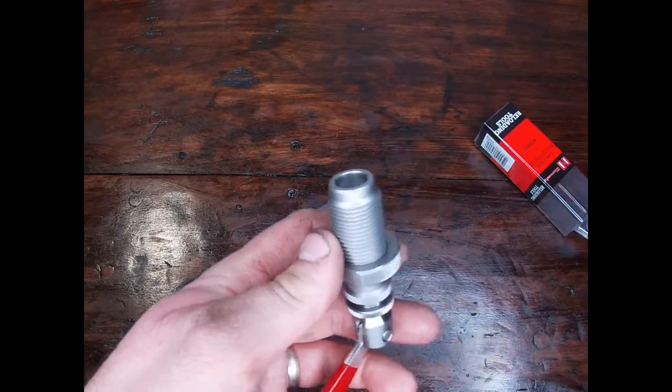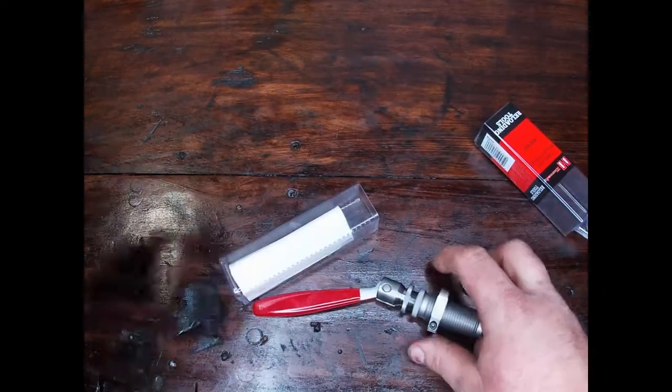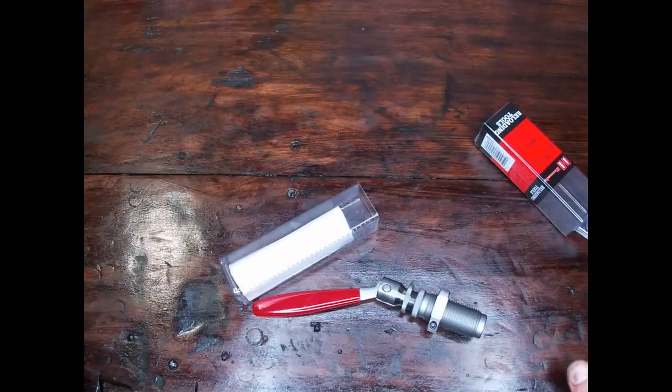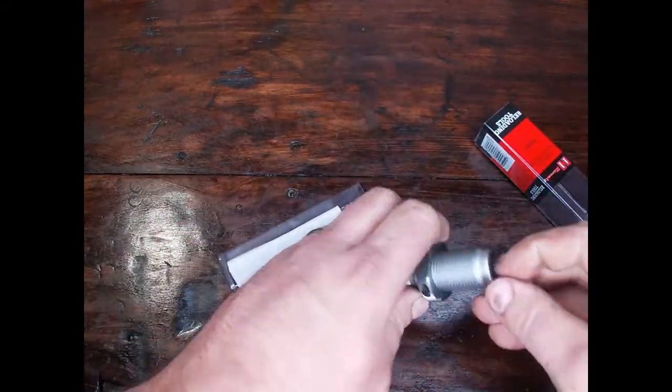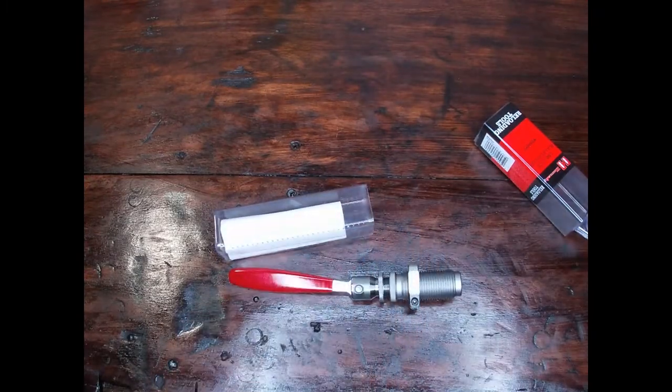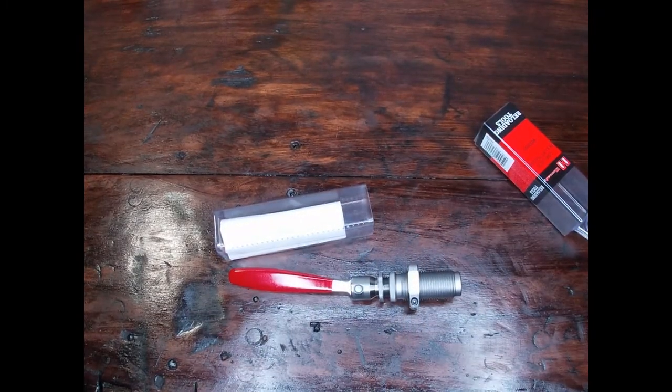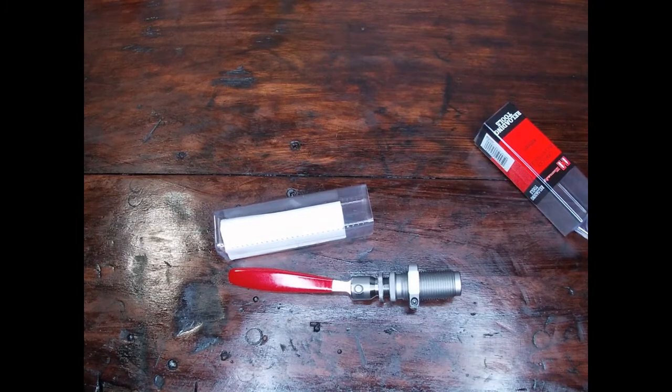So what you're doing is you're putting pressure down on this collet here, and it's grabbing hold of that bullet. And when you do that, you take your press, you pull your press, and it pulls the bullet out. So you don't have to use the old hammer trick that everybody's been using for such a long time.